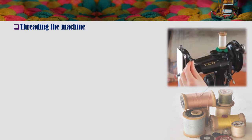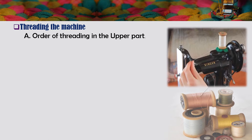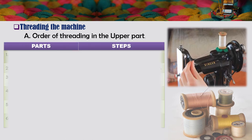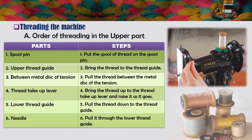Next, threading the machine. Here are the steps on how to thread the upper part of the sewing machine. Number one: put the spool of thread on the spool pin. Number two: bring the thread to the upper thread guide. Number three: pull the thread between the metal disk of the tension.